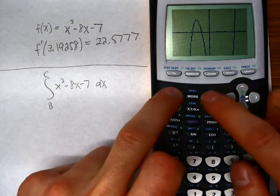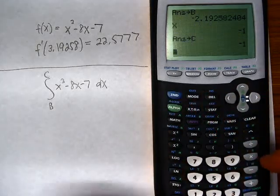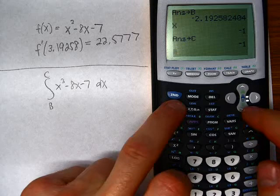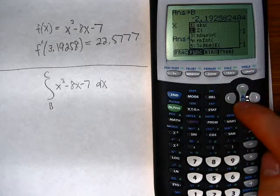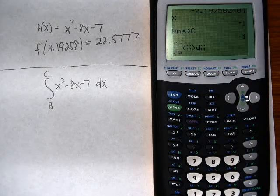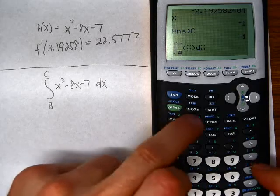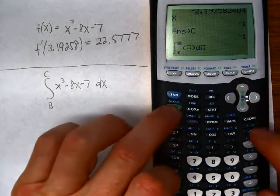So I'm going to quit out to the main screen. I'm going to go alpha f2, function integration. Now I'm going to enter my variables, b and c.